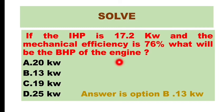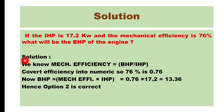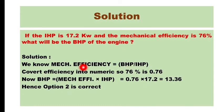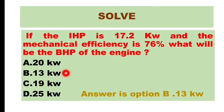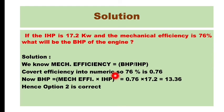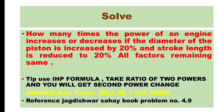Now we will solve two problems. The first one: if the IHP is 17.2 kW and mechanical efficiency is 76%, what will be the BHP? Mechanical efficiency equals BHP divided by IHP. Converting 76% to decimal gives 0.76. BHP equals mechanical efficiency multiplied by IHP, so BHP = 0.76 × 17.2 = 13.36 kW, which is very close to option B — 13 kW is the correct answer.